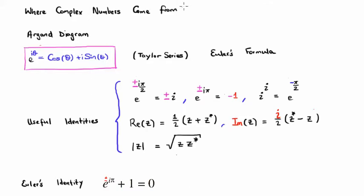I'm going to start with where complex numbers come from, derive the Euler formula using Taylor series, talk about some useful identities, and conclude with the Euler identity, the very famous Euler identity.